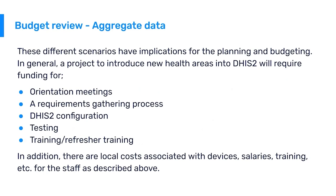A budget for a new aggregate health area in DHIS2 also requires money set aside for a requirements gathering process, the configuration itself, testing, and importantly, training or refresher training. In addition, there are local costs such as devices, salaries, and training for staff.